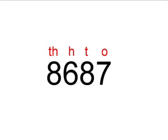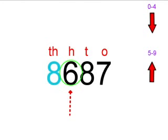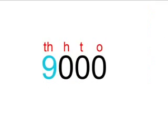Our next number is 8687. Because 6 is greater than 5, we round it up to the next thousand, which is 9000.